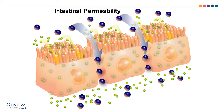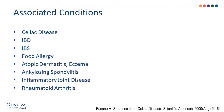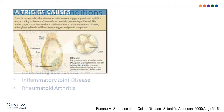The intestinal permeability assessment looks at both intestinal permeability and malabsorption. The resulting leakage of luminal toxins and inflammatory mediators is associated with a number of chronic inflammatory, autoimmune, and functional disorders.